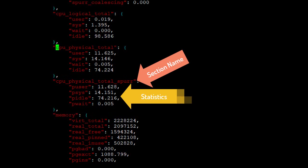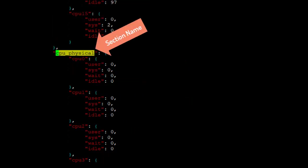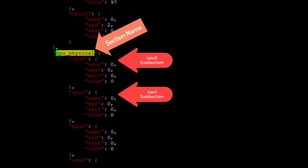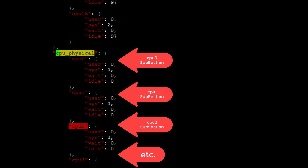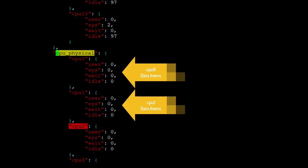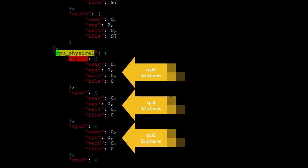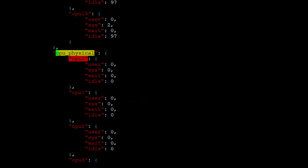If we look at the JSON output of njmon, we'll see that we have the name of the particular area of stats and then inside these brackets we have the individual stats. Now if we go to the data which includes the individual CPU — the CPU physical — we can see we have another level in here. We have the CPU name, and then the stats below that. So this means that these are the names of these variable resources. There could be different numbers of cores, same with disks and networks and those sorts of things.